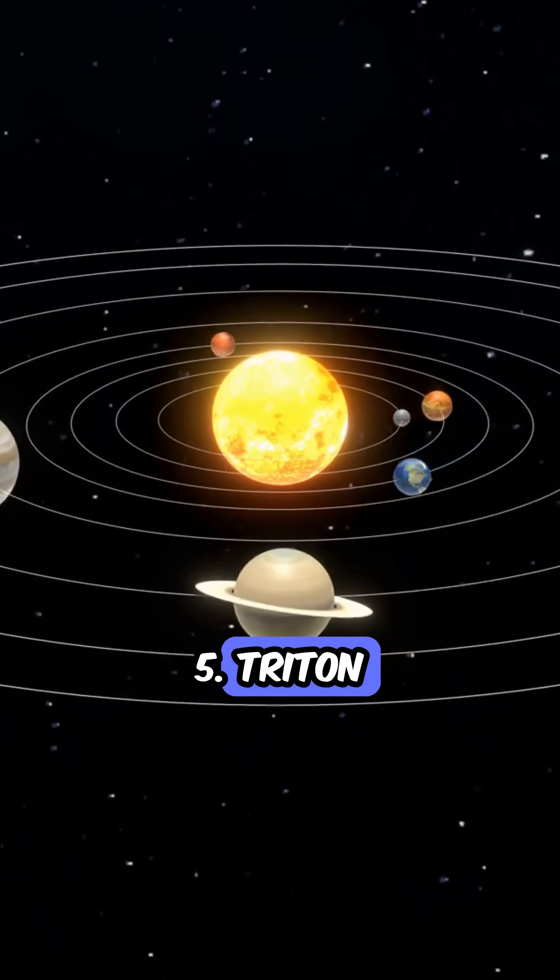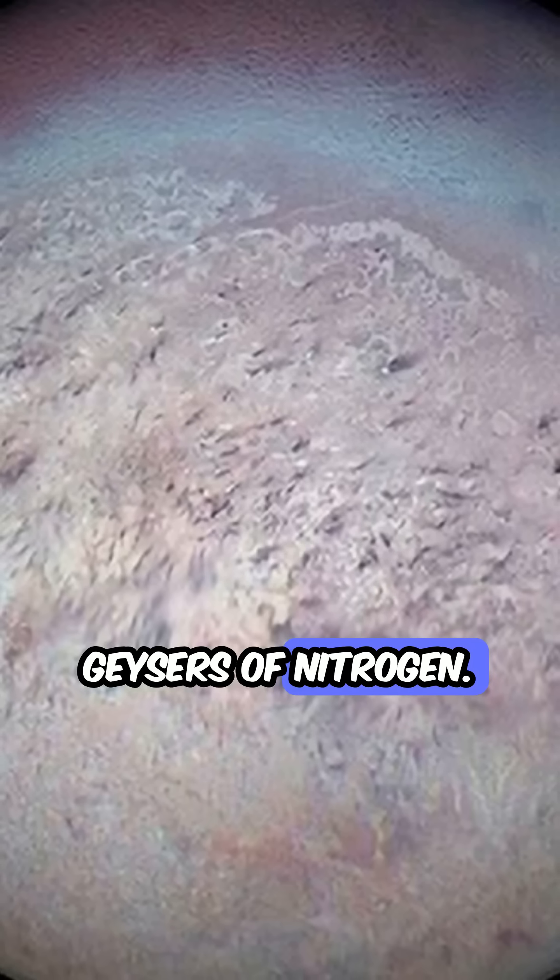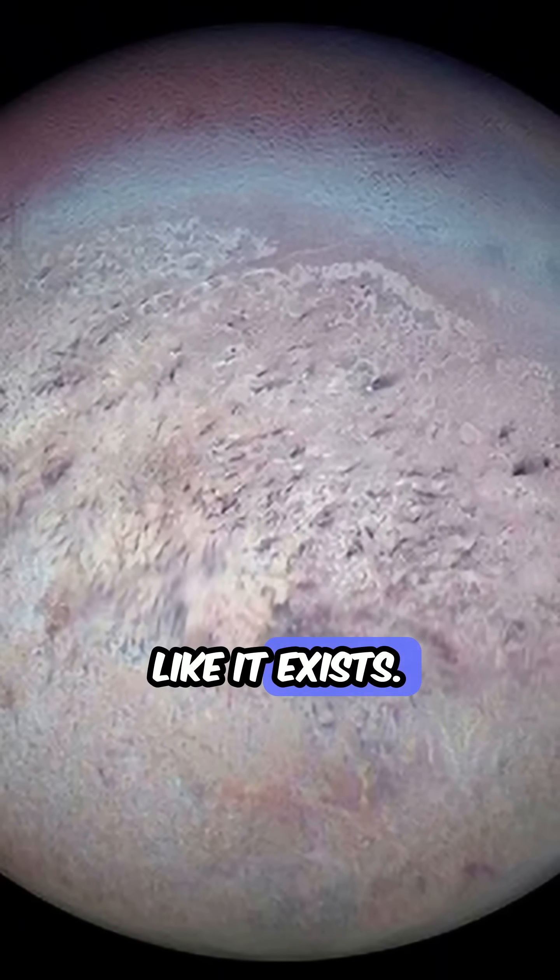Number 5: Triton. It orbits Neptune backwards and may erupt with geysers of nitrogen. No other moon like it exists.